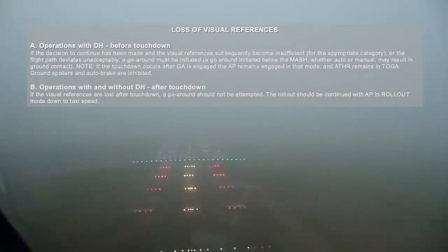Operations with Decision Height, before touchdown: If the decision to continue has been made and the visual references subsequently become insufficient for the appropriate category, or the flight path deviates unacceptably, a go-around must be initiated. A go-around initiated below the minimum approach break-off height, whether auto or manual, may result in ground contact.